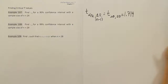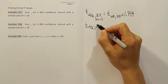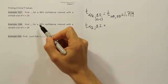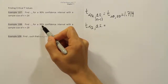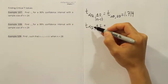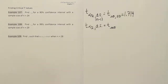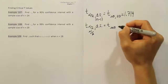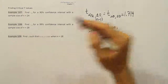Now let's look at example 108. We're again finding t alpha divided by 2 with degrees of freedom. For a 99% confidence level, alpha must be 1% because 99% plus 1% equals 100%. Half of 1% is 0.005 — remember that 1% as a decimal is 0.01, and dividing by 2 gives 0.005. The degrees of freedom is n minus 1, so 29 minus 1 gives us 28.